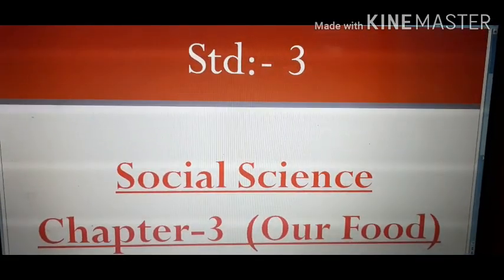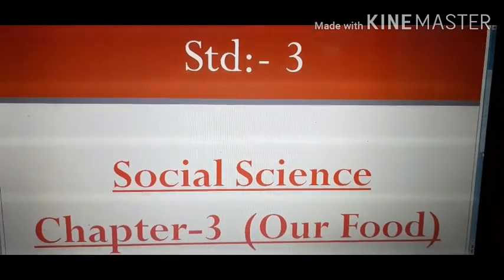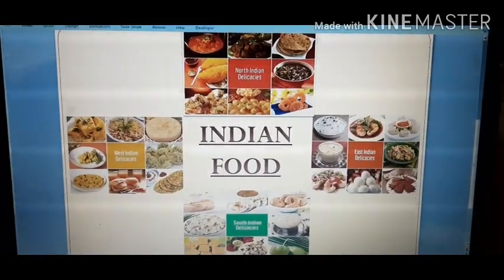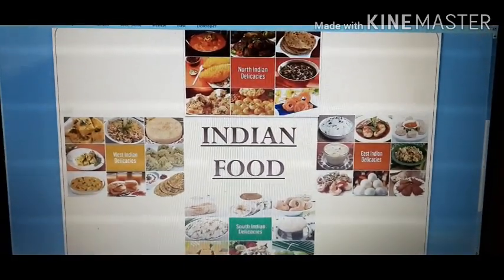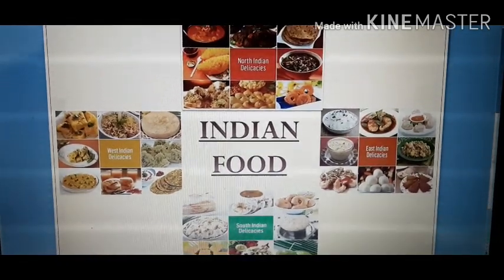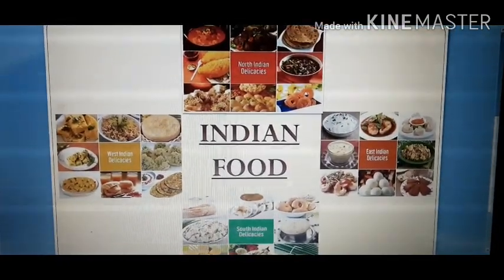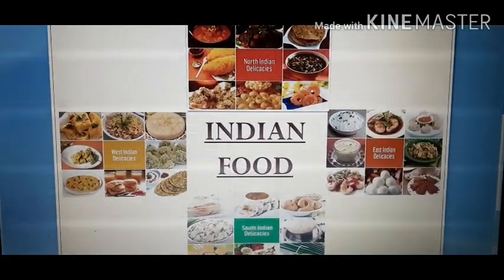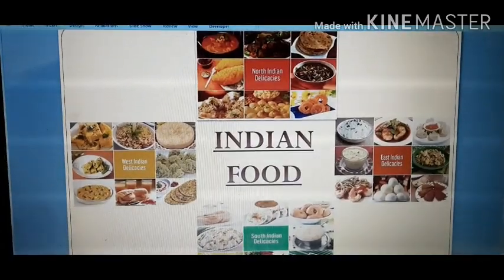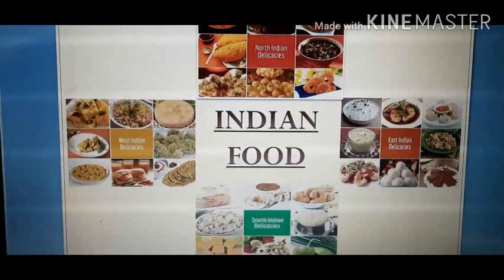Hello students, hope you all are fit and fine. This is your third chapter of Social Science. Look at the screen — here you can see various food items from different parts of India. Now the question is, why am I showing you pictures of food items? Because it is related to our third chapter, which is 'Our Food.'